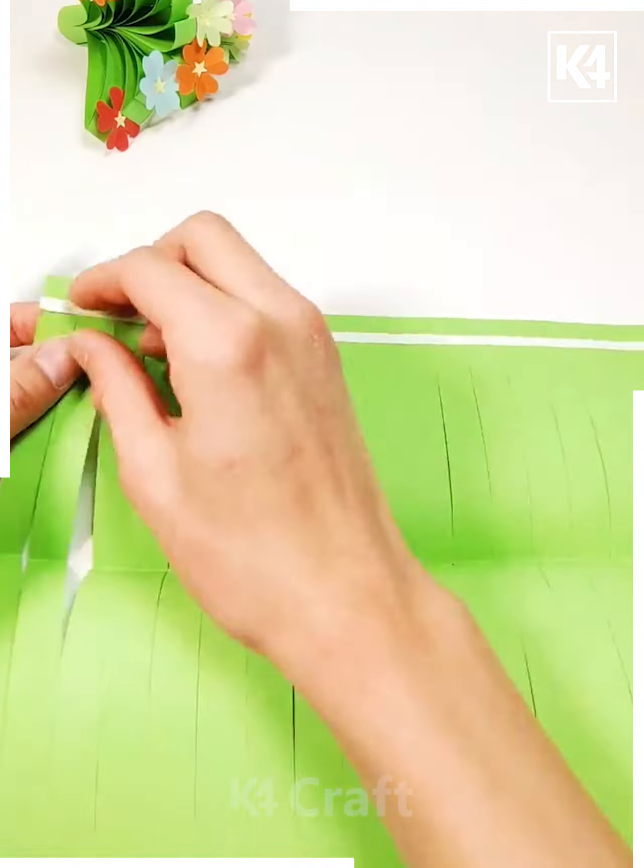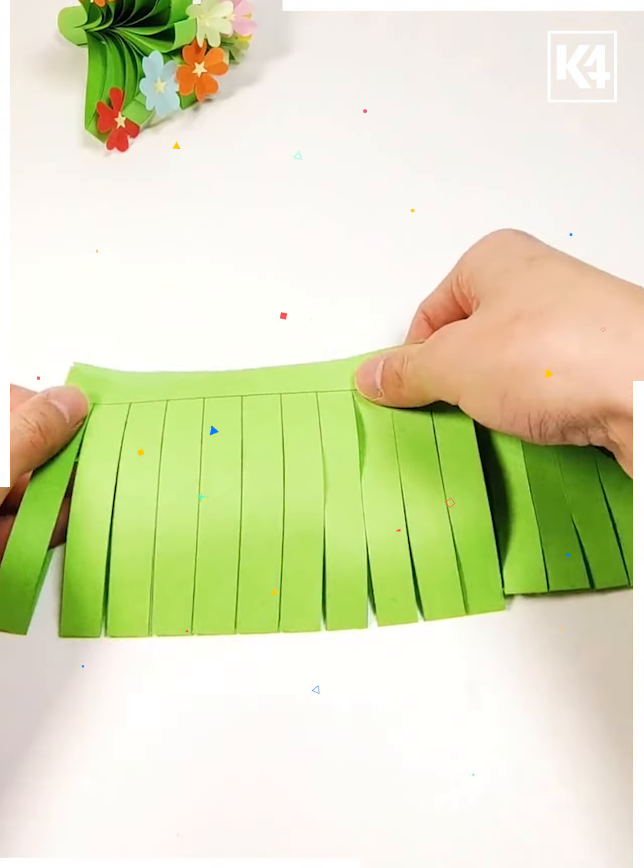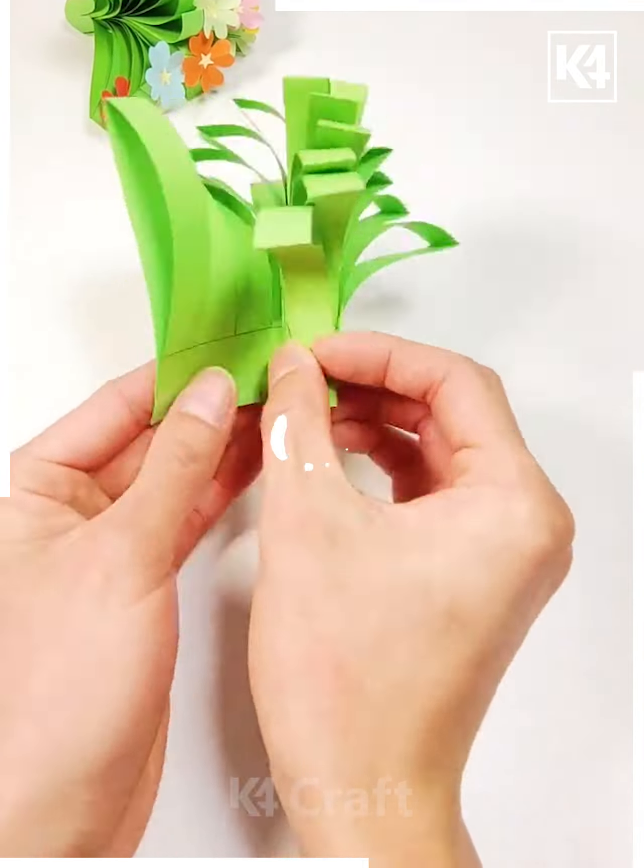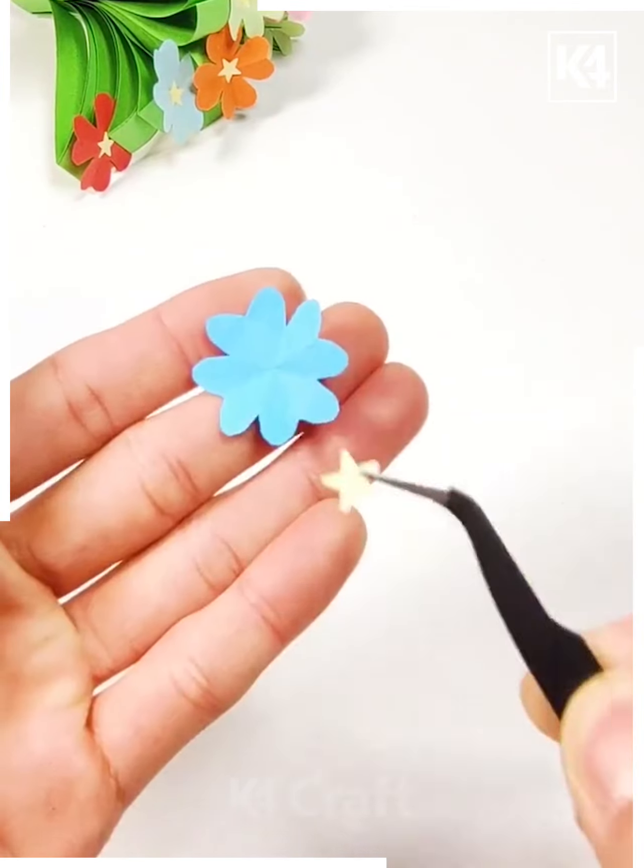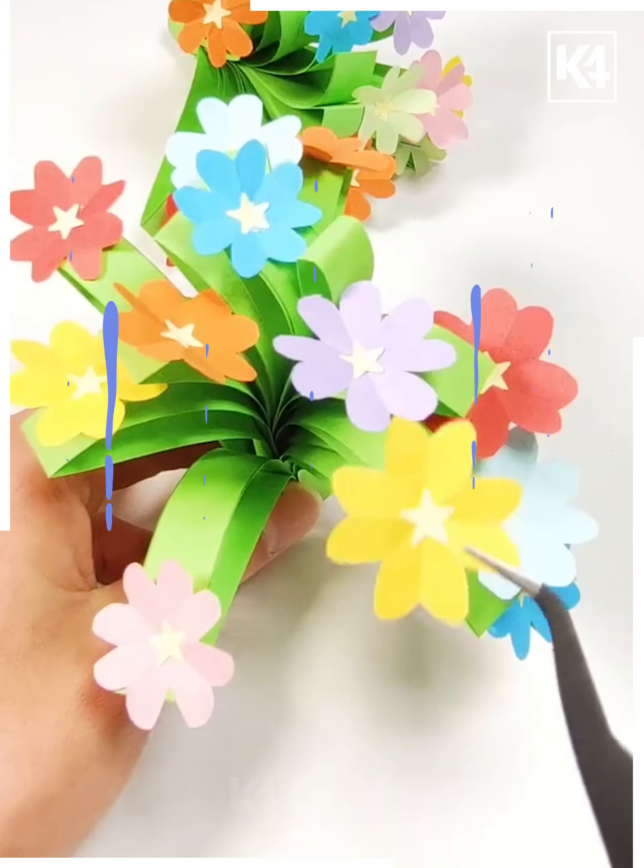Let's move ahead. Here we've taken a green sheet and cut it like this, folding it so that it looks like a flower bouquet. Then we are making flowers in colorful colors, and it's ready.